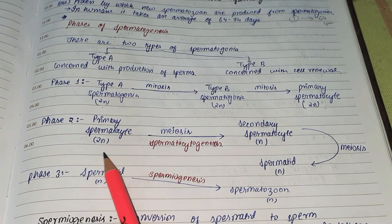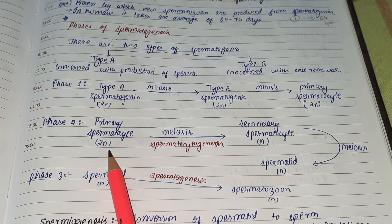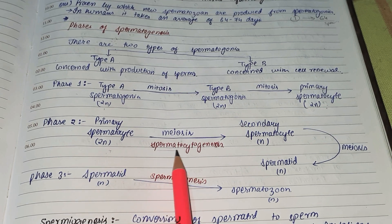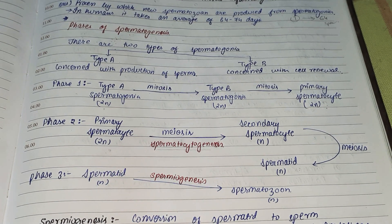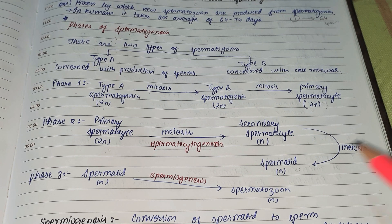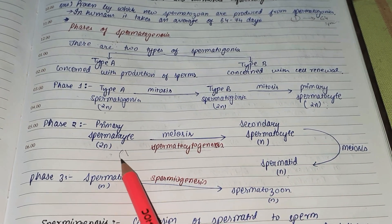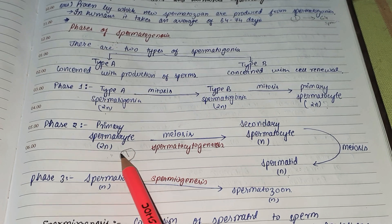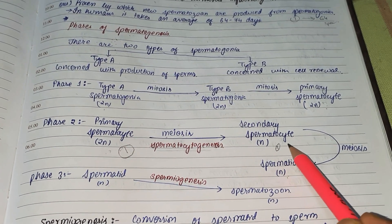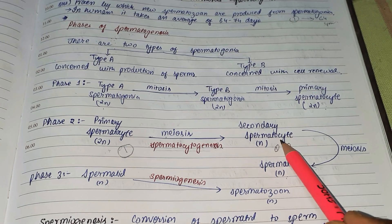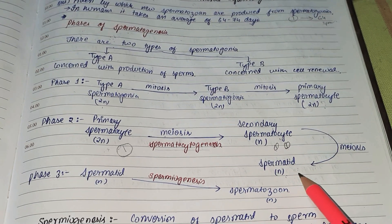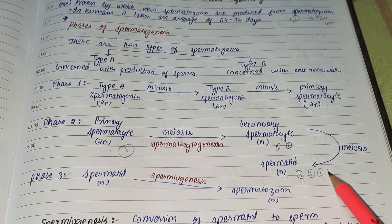Phase two of spermatogenesis: the primary spermatocyte, which is diploid, undergoes meiosis. This process is known as spermatocytogenesis. They produce secondary spermatocytes, which are haploid. So one primary spermatocyte undergoes meiosis to produce two secondary spermatocytes, and each of those undergoes meiosis to produce a total of four spermatids.